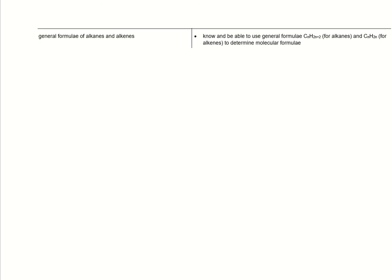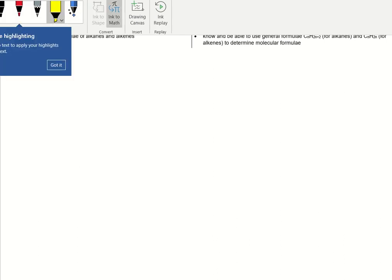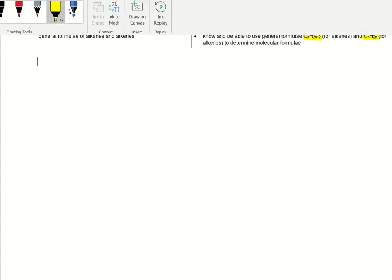You do need to remember these, so I just stick a highlighter through them. You should be able to remember them in the exam - you've probably seen them at GCSE. The CnH2n+2 and the CnH2n for the alkanes.